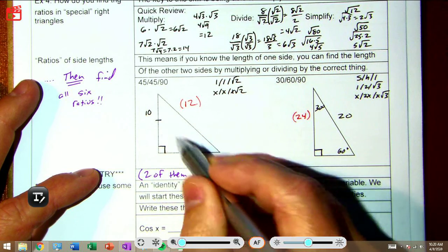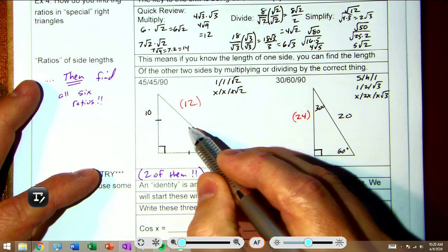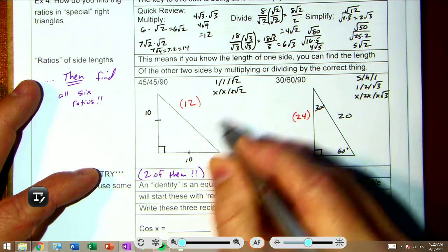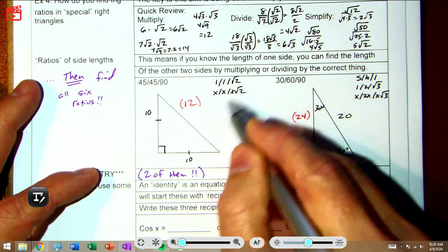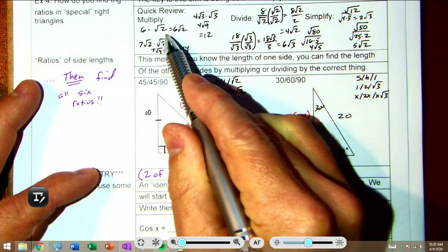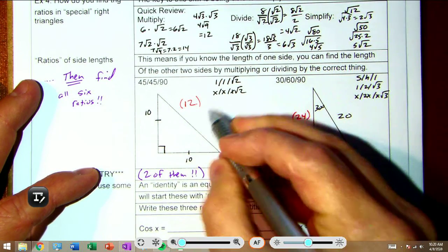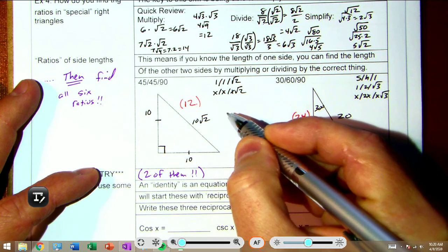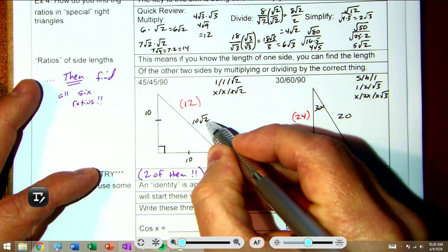What that means is this: because it's an isosceles right triangle and because of the Pythagorean theorem, if one leg is 10 then I know the other leg is 10. And then x times √2, just like I did up here, if I take a leg times √2, the hypotenuse is 10√2.